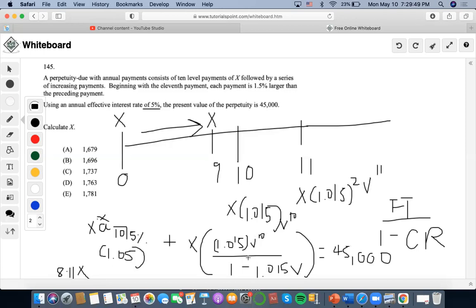Then for this one, I need to solve this: 1.015 times 1.05 to the negative 10, which is 0.62312, over 1 minus 1.015 times 1.05 to the negative 1. So it's going to be 0.966 minus 1, which is 0.033. Then it's going to be 0.62312 divided by 0.033. So then it's going to be plus 18.88X.